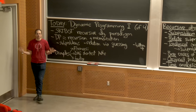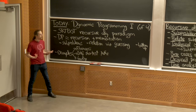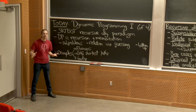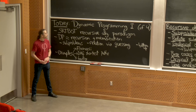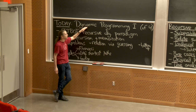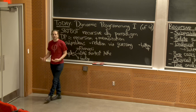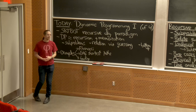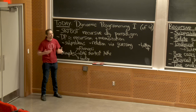Today we're going to start a new section on algorithmic design — how to, from scratch, come up with a polynomial time algorithm to solve a problem. In particular, we're going to talk about an algorithmic design paradigm called dynamic programming, which is extremely powerful. It's probably the most powerful algorithmic design paradigm — very general, can solve lots of problems.